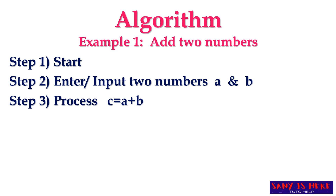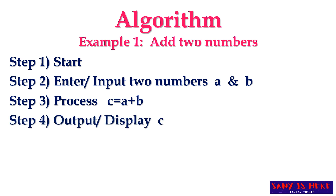After every process I want to store the result in some place, and that place I have taken as C. The process A plus B has taken place and the result is stored in C. Since the result is in C, we need to display it - the output will be C. So we have got the output. Note that every algorithm starts with the start step and every algorithm ends with the stop step.